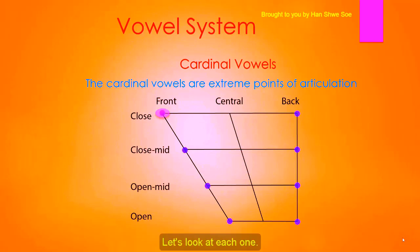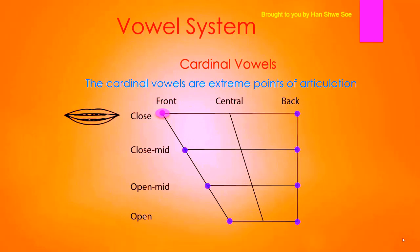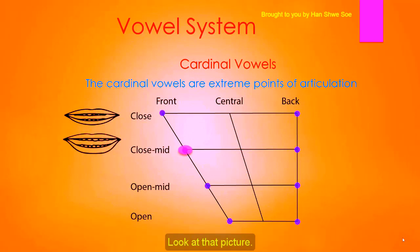The first one is a closed front vowel. The teeth are almost touching and the tongue is in the front part of the mouth. It is pronounced 'ee.' Position your mouth like that and try to pronounce 'ee.' The next one is more open than the last one — look at that picture and try to pronounce 'ee.'